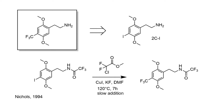As for how they made it, the starting material was 2CI or DOI in the case of the amphetamine derivatives. They found it necessary to protect the amino functionality, so they used a trifluoroacetamide, which can be easily installed with trifluoroacetic anhydride. These normally come off under mild conditions of basic hydrolysis, so it's a fairly convenient protecting group to use.